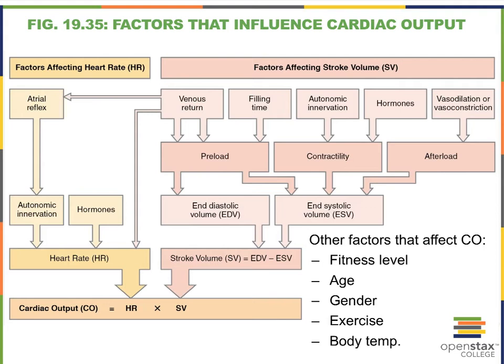We can take the flow chart even further and focus on the factors that impact individual parts of stroke volume. Cardiac output is a product of heart rate and stroke volume. Stroke volume is the difference between EDV — end diastolic volume — and ESV — end systolic volume. Diastolic volume is especially impacted by preload, which is the amount of stretch heart muscle fibers experience in response to blood trickling into the heart when it's relaxed.